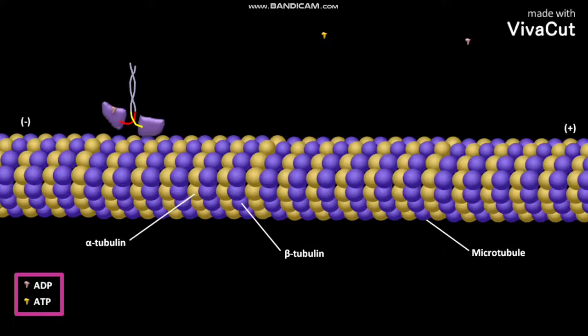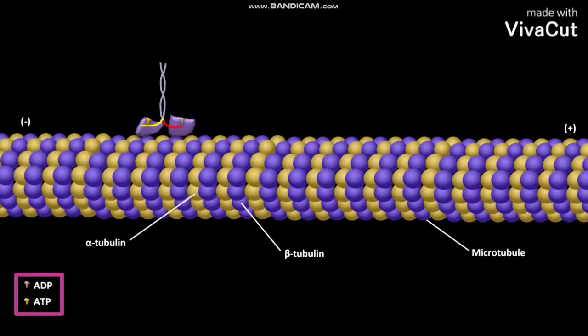It also results in strong binding of motor head to the microtubule. This is the leading head and to this leading head an ATP then binds. The trailing head remains bound to the ADP. The binding of an ATP to the leading head induces a conformational change. Due to this conformational change, the neck linker region points forward and the neck linker is docked into the head domain.